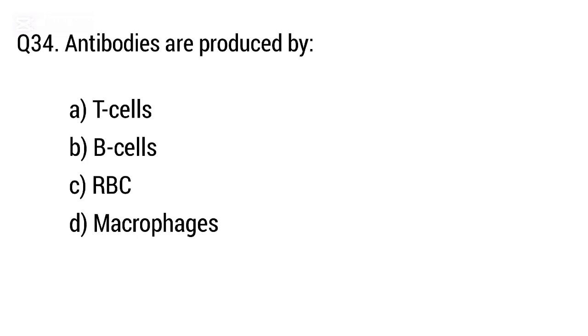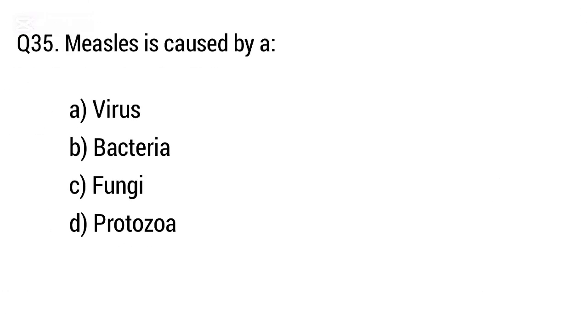Question 34: Antibodies are produced by. The right answer is Option B, B cells.